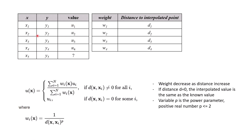Here I have five points. I know the value of four points, however I don't know the value of the last point, so I would like to estimate the value using the Inverse Distance Weighting interpolation method. The formula is shown here, where u(x) is the unknown or interpolated value, u_i is the point with a known value, w is the weight, d is the distance, and p is the power parameter.